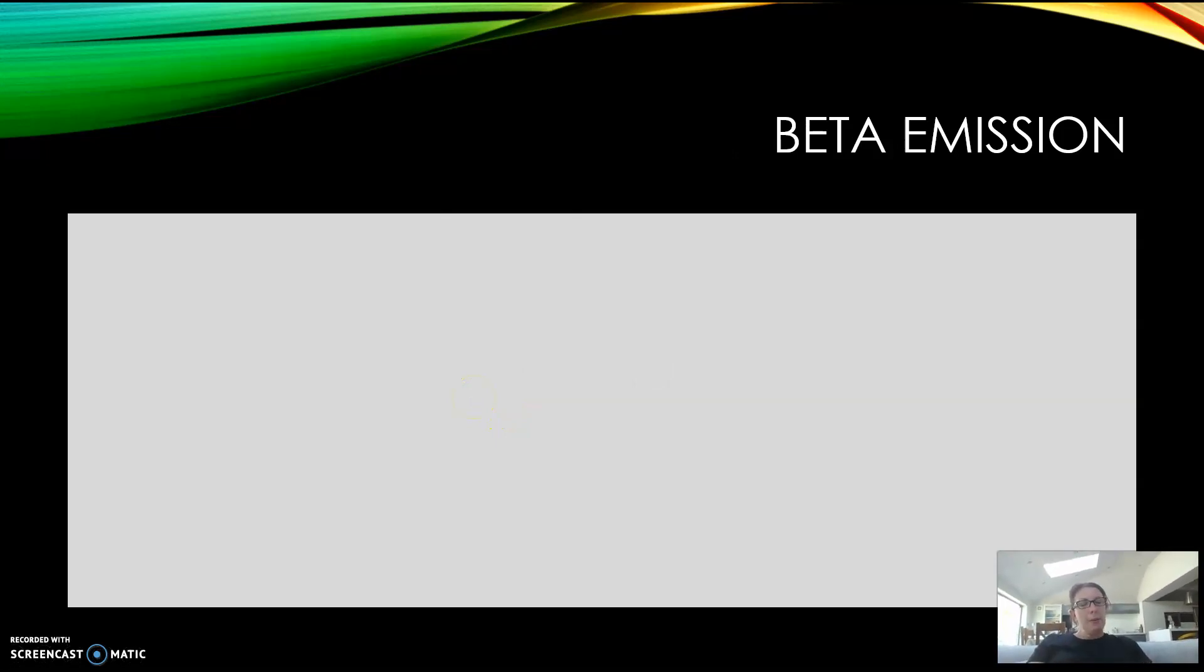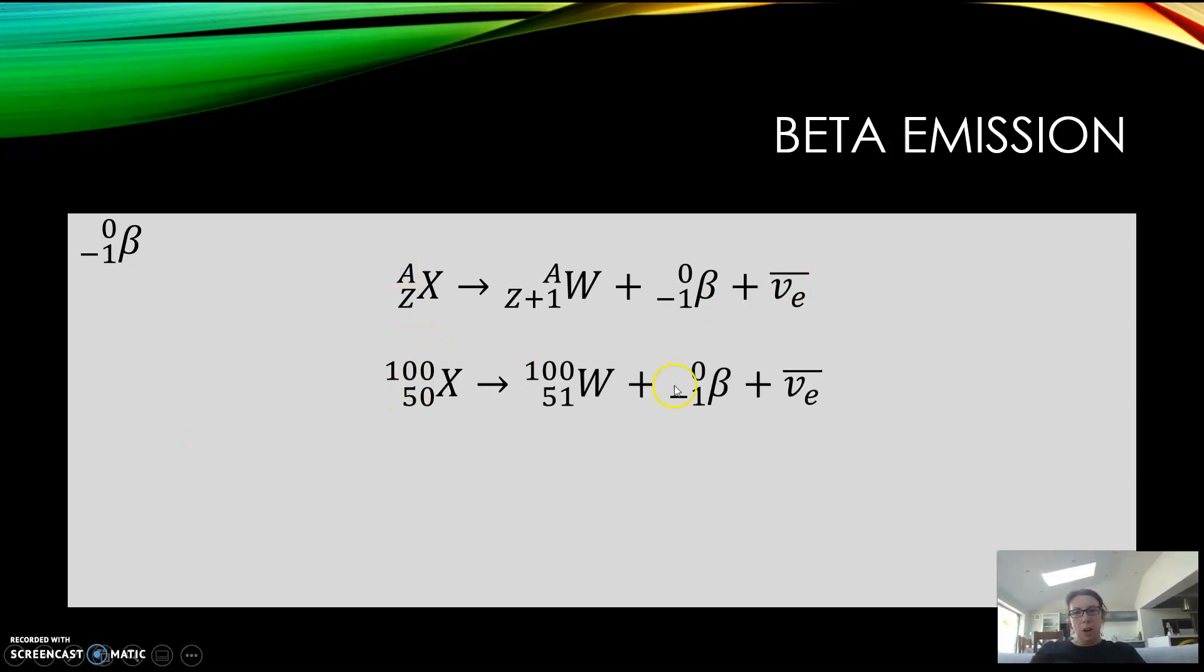In beta emission, which we did in chapter one, for beta minus: A stays the same because there's no change in protons and neutrons, and Z you plus one to get the isotope, and you release the negative beta and the anti-neutrino. So 100 stays the same, and it's Z plus one, so 51 minus one makes 50. Beta plus is the opposite, so you're going to take away one. So here, 100 stays the same and 50 minus one is 49, plus one makes 50.